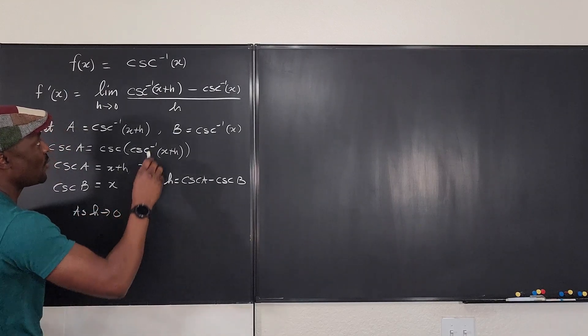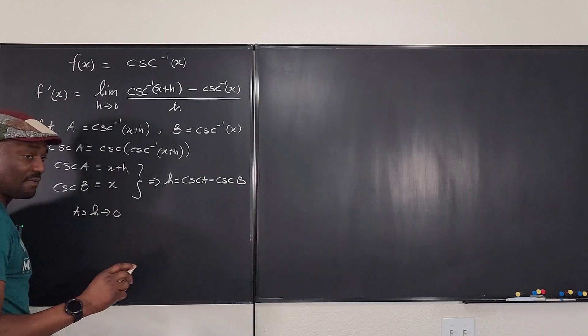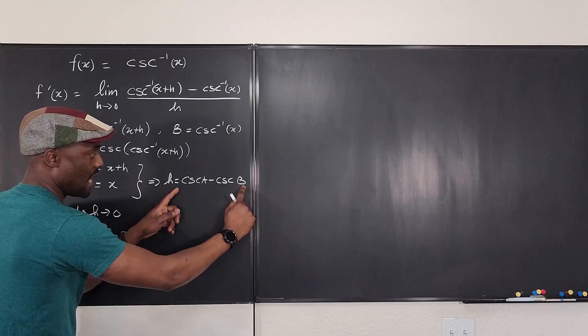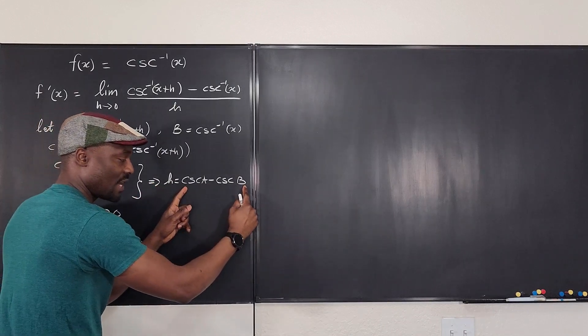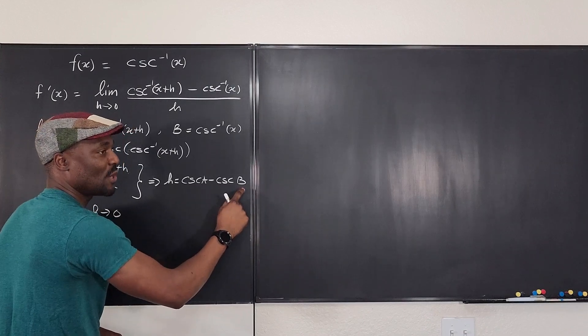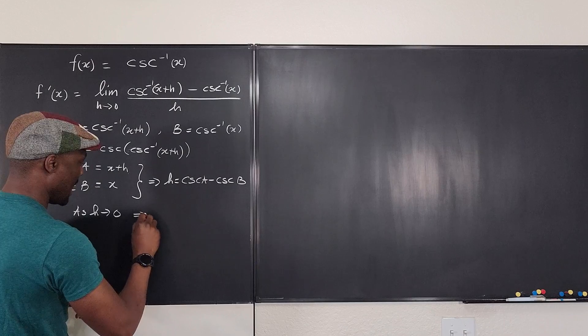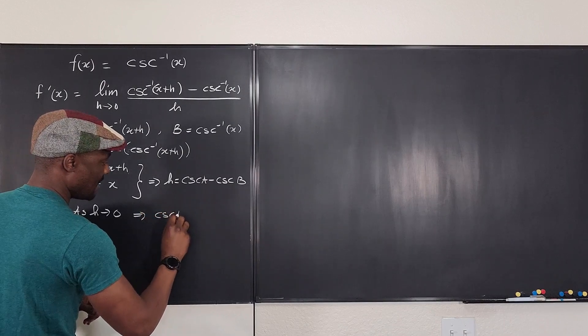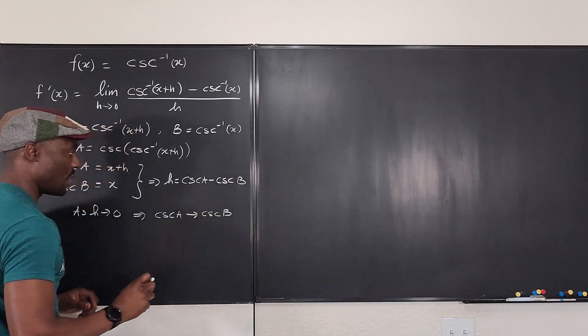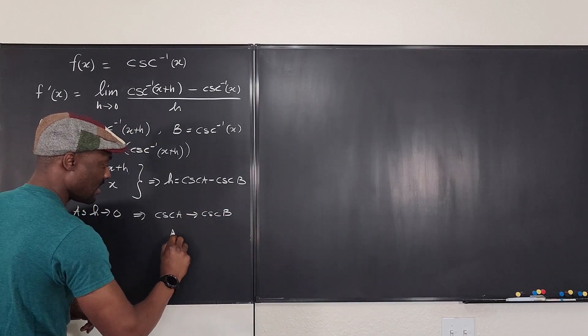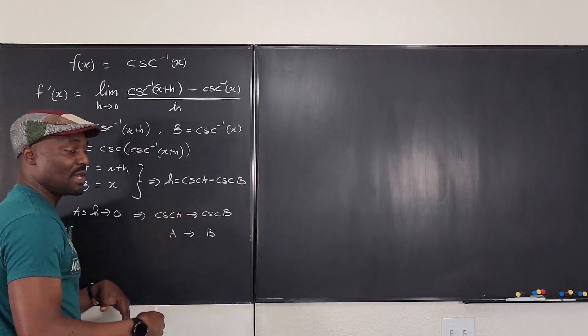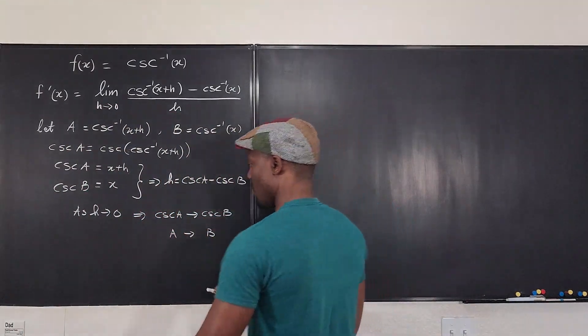And from previous examples that I've shown you, you can see the following are true. As h approaches zero, which is what we have here, the following are true. We know that this will approach zero. If this goes to zero, the right-hand side goes to zero. And this right-hand side only goes to zero if cosecant a goes to cosecant b, which implies a goes to b. Or a minus b goes to zero.